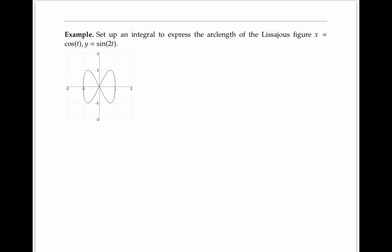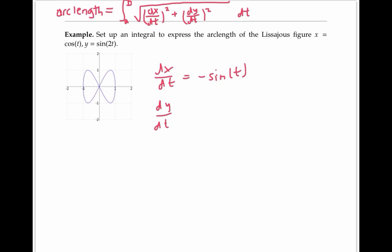Now let's use this formula to set up an integral to express the arc length of this Lissajous figure. Since dx dt is given by negative sine of t, and dy dt is given by two cosine of two t, our arc length is given by the integral of the square root of sine of t squared plus two cosine of two t squared dt.